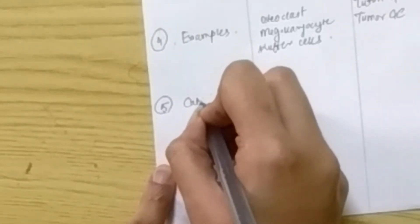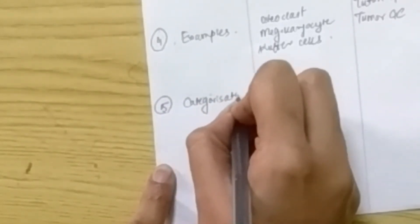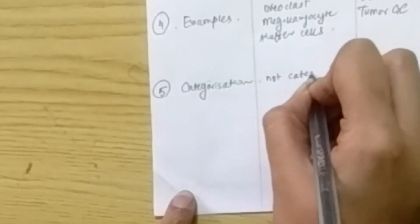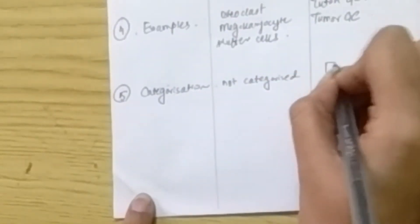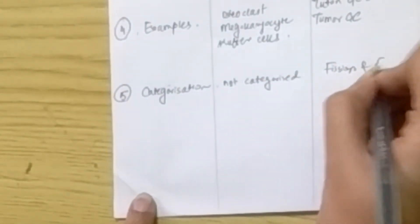That is categorization. So the physiological giant cells are not categorized, but the pathological giant cells are categorized into fission and fusion kind of giant cells.